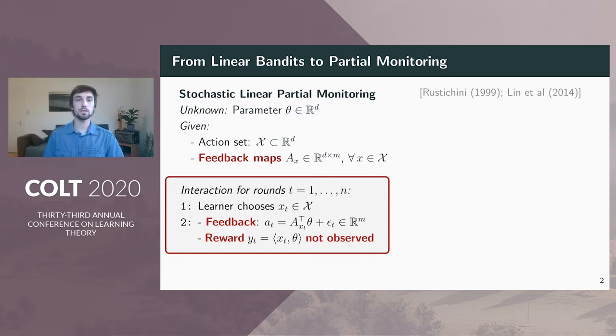The key difference is that now the feedback is decoupled from the reward. The observation is given by the feedback map a_x^T theta and can also be multivalued. The reward is still the inner product of x_t and theta, but the reward is not observed. The only way to learn about the reward is through the indirect feedback on theta from the feedback maps a_x.